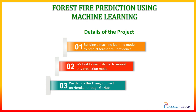The project is divided into three parts: first, building a machine learning model to predict forest fire confidence; second, we build a Django web app to mount this prediction model; and lastly, we deploy this Django project on Heroku through GitHub.